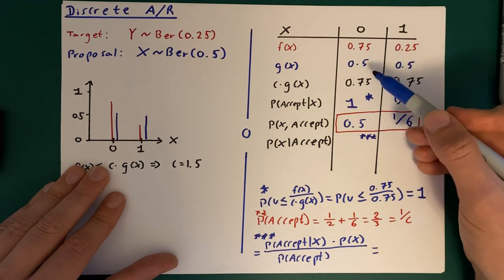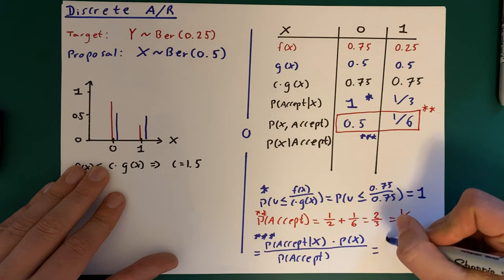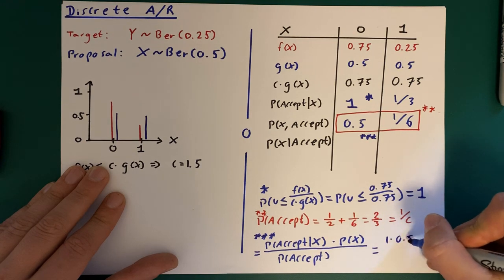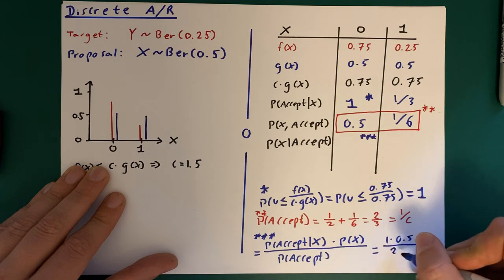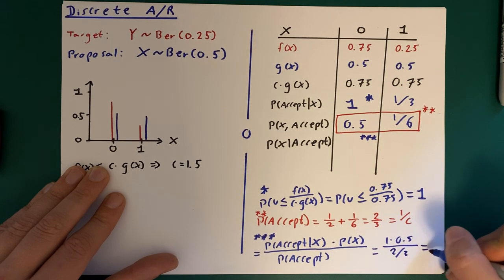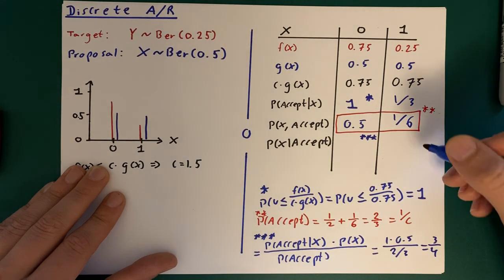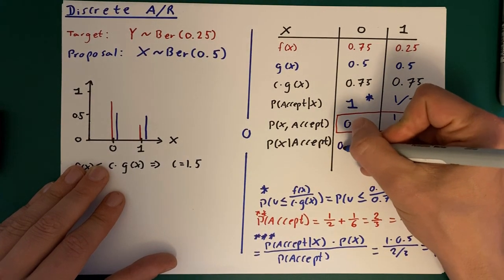And this then becomes: the probability of accepting conditional on x, that's 1; probability of x taking the value 0, that's going to be 0.5, so it's 1 times 0.5 over probability of accepting, that was 2 divided by 3. This is going to be equal to 3/4 or 0.75, so let's just call it 0.75. And over here we'll have 0.25.